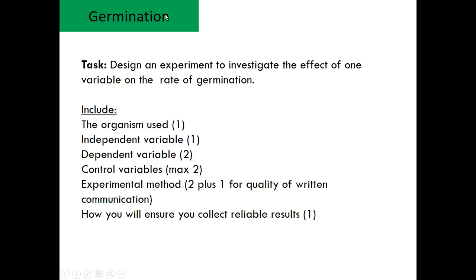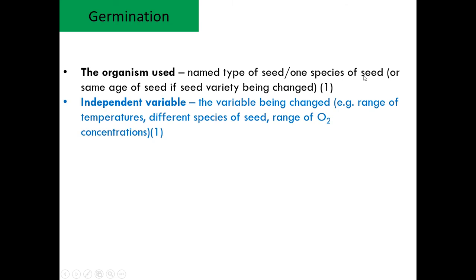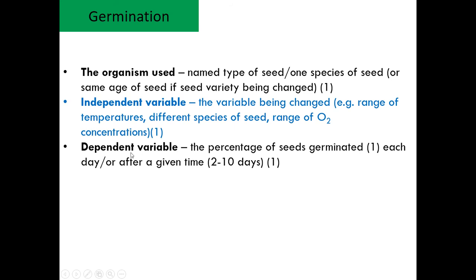At the end of the lesson you're going to design an experiment to investigate the effect of a variable on germination. You'll need to consider: the organism you're going to use — name one kind of seed or species; an independent variable, which is the one you change, such as a range of temperatures, different species, or a range of oxygen concentrations; and a dependent variable, which is the one you measure — usually the percentage of seeds germinated, either each day or after a given time.